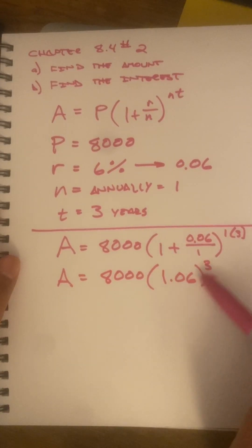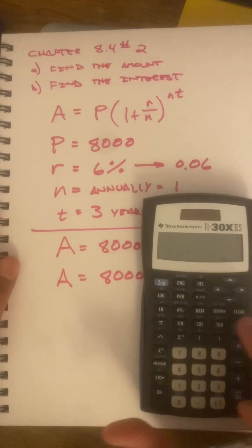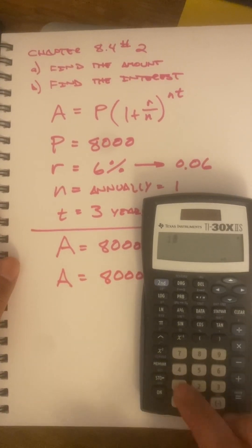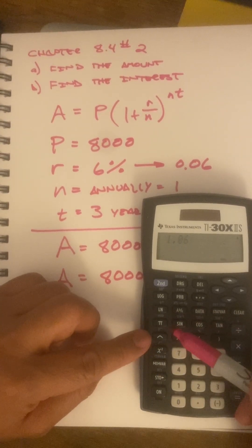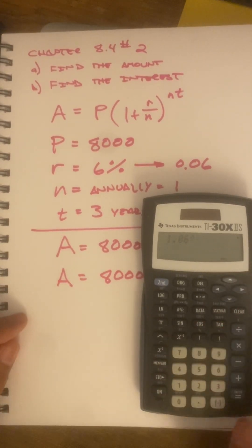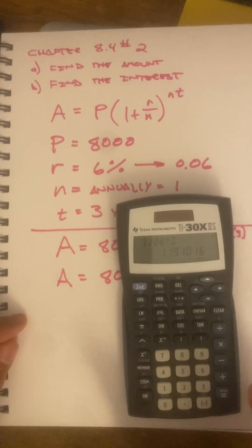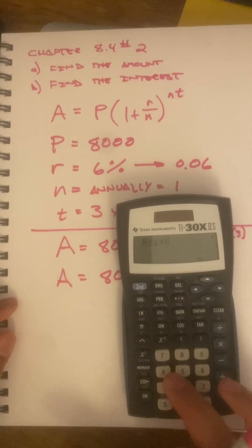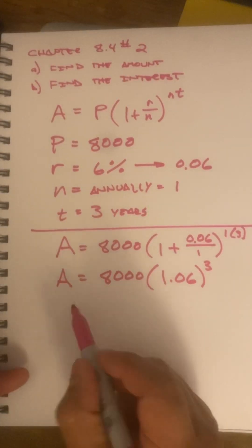I'm going to do my exponents first and then multiply it by 8,000. I'm going to get my handy calculator here. 1.06, this button here is the exponent key to the power 3 equals. And I get some long number there. Keep the long number. Don't cut it off. And multiply it by 8,000.